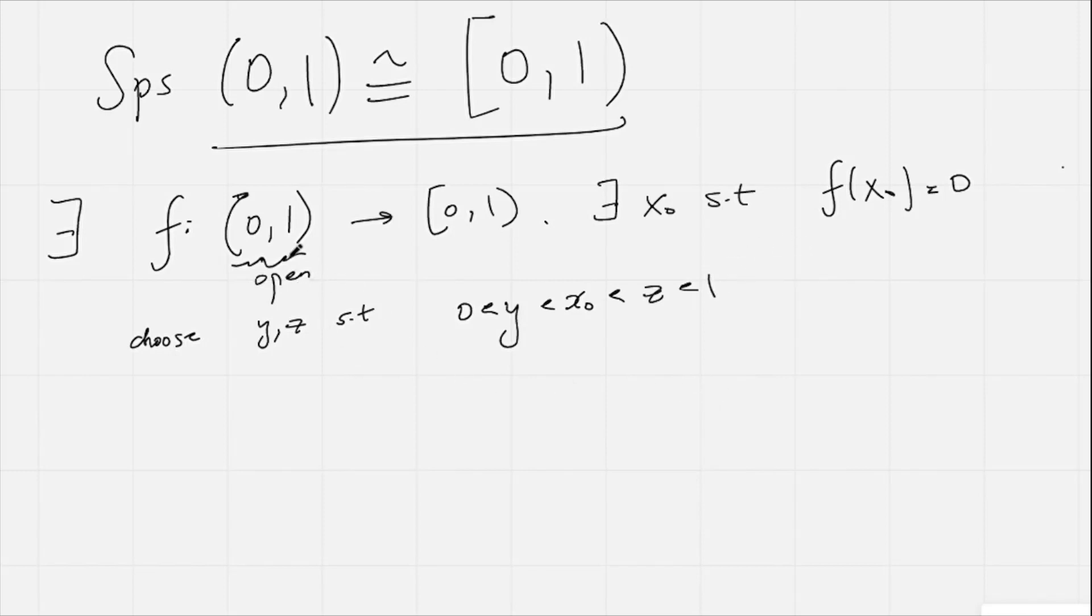And we can do this because this interval here is open. In fact, there are infinitely many choices for y and for z. Okay, now what do we notice? Well, we notice that because f(x₀) is 0, neither f(y) nor f(z) can be 0, because otherwise f wouldn't be bijective.